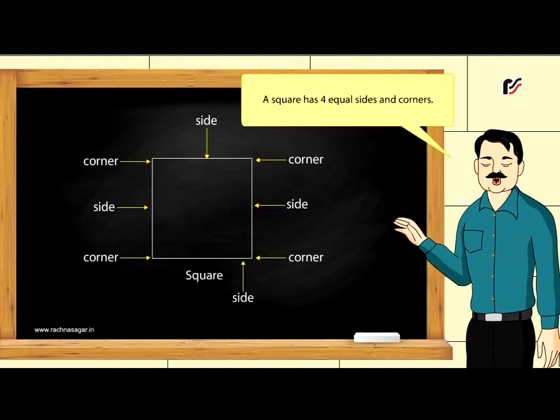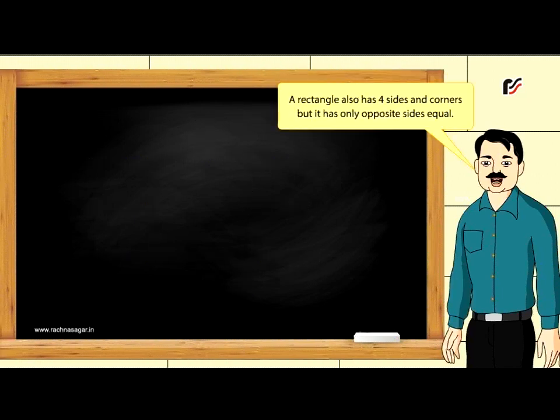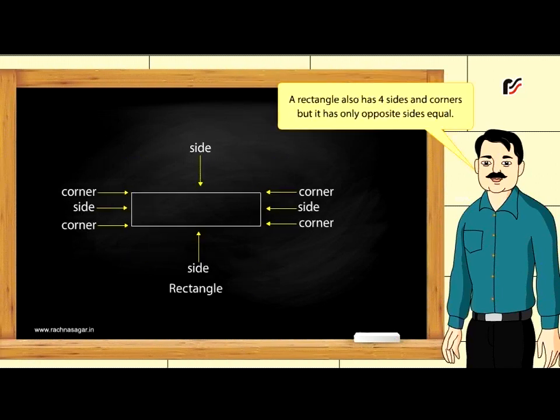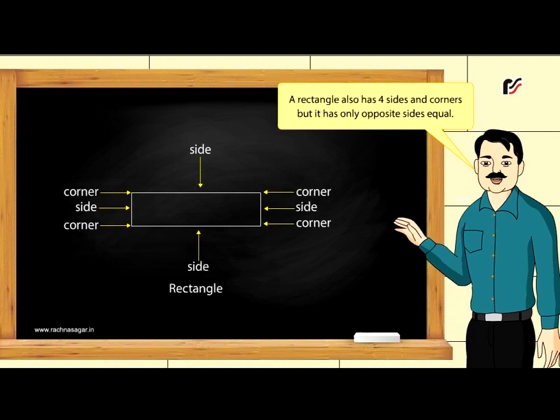A square has four equal sides and corners. A rectangle also has four sides and corners but it has only opposite sides equal.